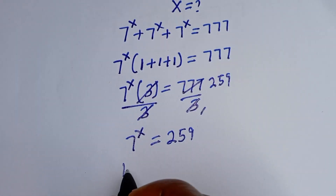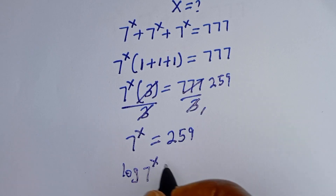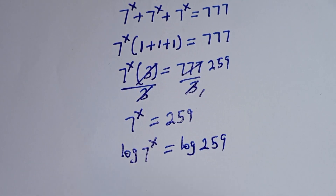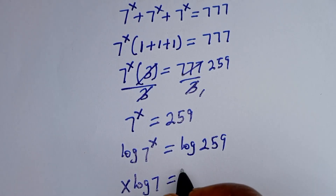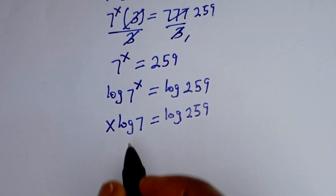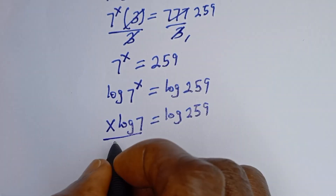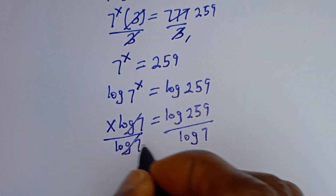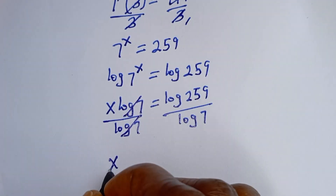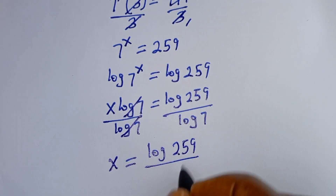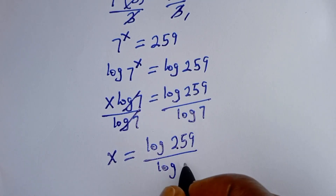Let's take the log of both sides. Log of 7 to the power of s is equal to log 259. Now this becomes s times log 7 is equal to log 259. We can divide both sides by log 7, so s is equal to log 259 divided by log 7.